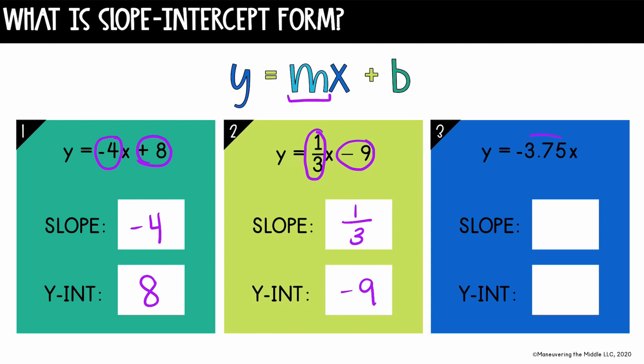In the last equation, y equals negative three and 75 hundredths x. Well, negative three point seven five is our slope. And then because there's nothing here being added or subtracted, we know that our y-intercept is zero. So it would cross the y-axis at zero, or in other words, the origin.